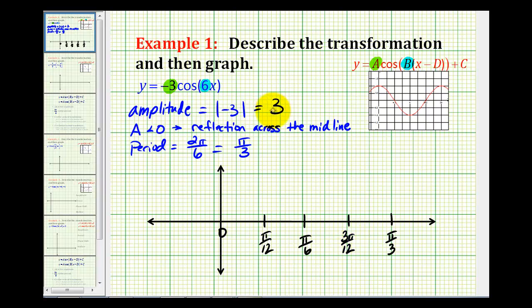Next, our amplitude is three, so we'll have a maximum value of three and a minimum value of three.